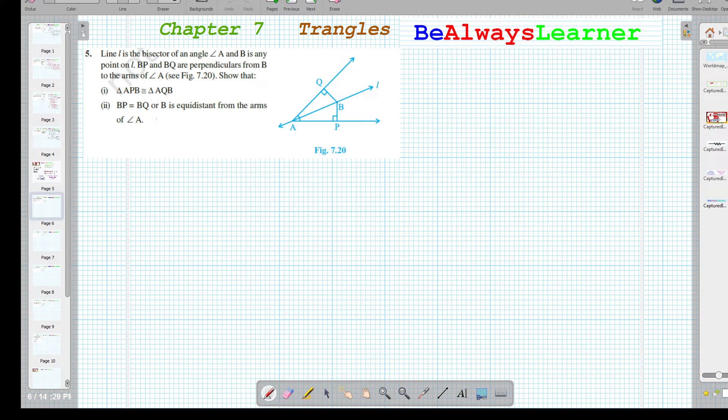So this is any point B on L. BP and BQ are perpendiculars from B to the arms of angle A.